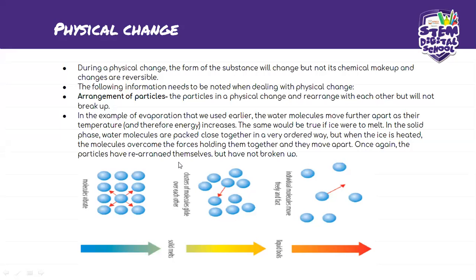In the example of evaporation, the water molecules move further apart as the temperature increases. The same would be true if ice were to melt — the molecules are packed closely together in a very ordered way. When the ice is heated, the molecules overcome the forces holding them together and move apart. The particles have rearranged themselves but have not broken up.